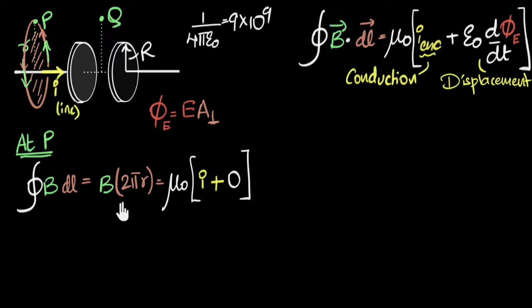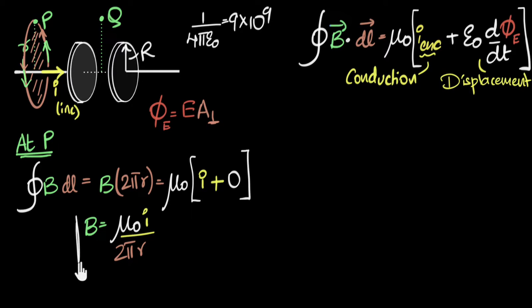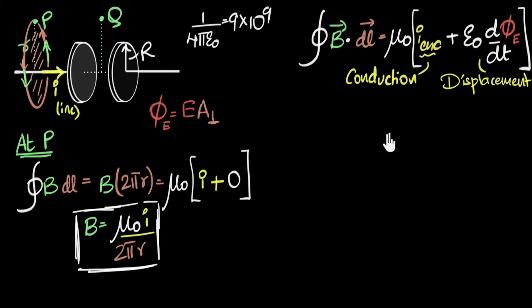So the magnetic field at P is B = μ₀I / (2πr). This is the same result we derived before using just Ampere's law. Now using Ampere-Maxwell's law, we get the same answer — which is reassuring.